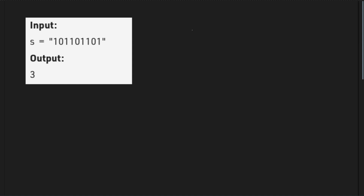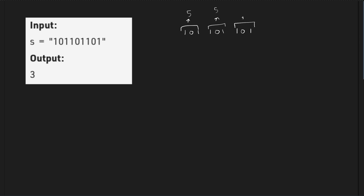Let us look at the sample test case. The input string is '101101101'. You can see that '101' equals 5 in decimal, so each piece equals 5, which is 5 to the power 1. The string is divided into three pieces, each equal to 5, so the answer is 3. There is no other configuration where all substrings are powers of 5 and the count is smaller than 3.